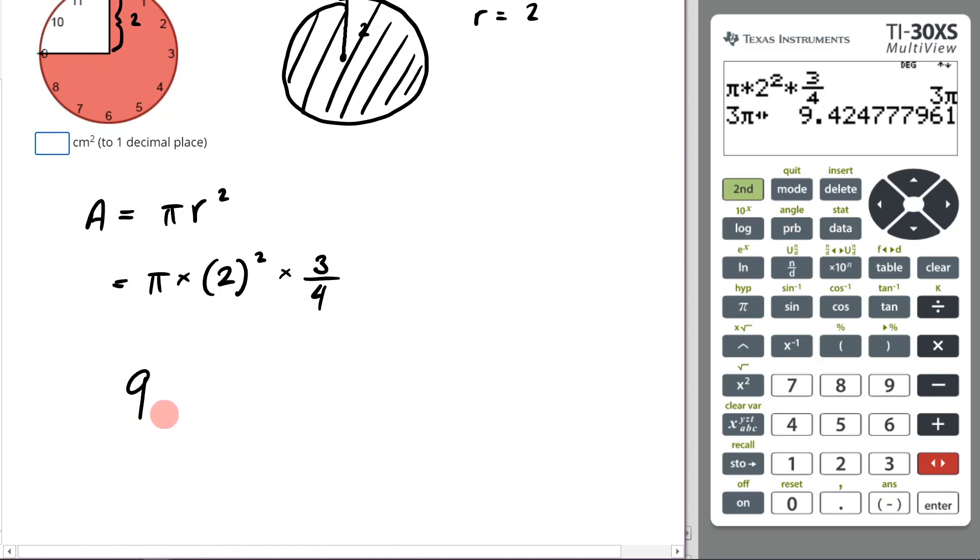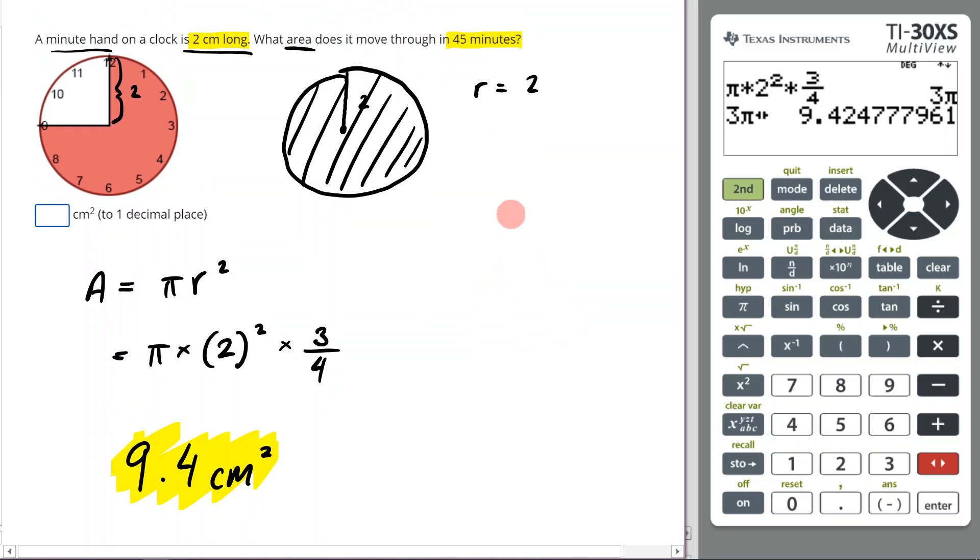my answer will just be 9.4 centimeters squared. So my answer is 9.4 cm². That's it! That's how you do that question. Hopefully it made sense and you feel comfortable with doing it. Make sure you reach out if you have any more questions. I'll see you in the next video!